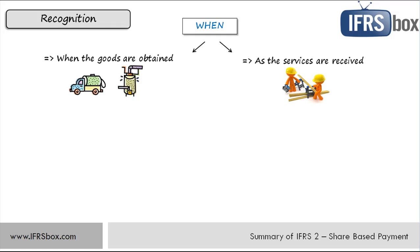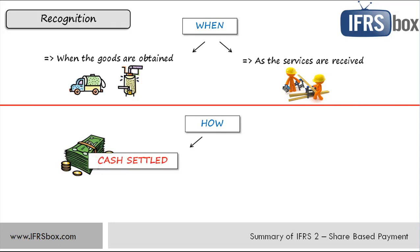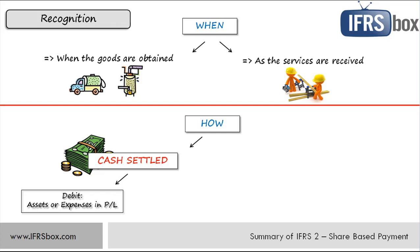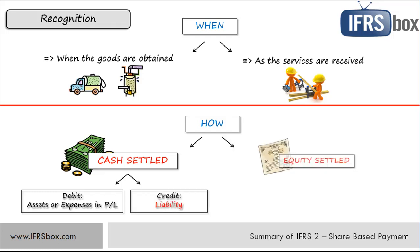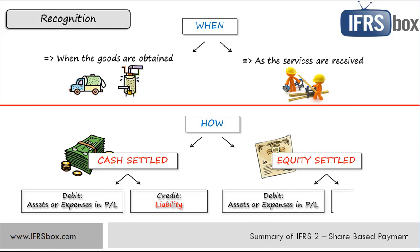Another question is how to recognize a transaction — that depends on the type. If the transaction is cash-settled, or an entity pays in cash based on the price or value of its equity instruments, then it is necessary to recognize the services or goods received. We need to debit either assets — for example, inventories or property, plant and equipment — or expenses, and the corresponding credit is recognized as a liability. If the transaction is equity-settled, then the debit entry is the same and the corresponding credit is recognized as equity.